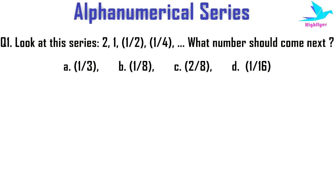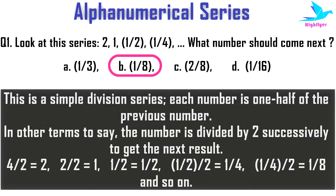Let's look at some examples. The first example: look at the series 2, 1, 1/2, 1/4 — what number should come next? The options are 1/3, 1/8, 2/8, or 1/16. The right answer is option B: 1/8. This series is a simple division series — each number is one half of the previous number; in other terms, the number is divided by 2 successively to get the next result.